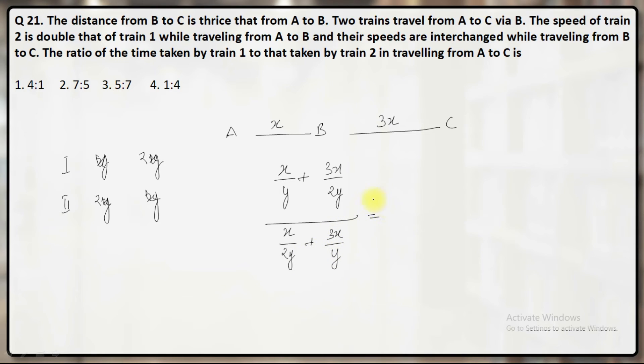This must be the ratio of the time taken. So the numerator, LCM will be 2Y and this will become 5X by 2Y. And this will become how much 2Y LCM? This will give you 7X by 2Y.